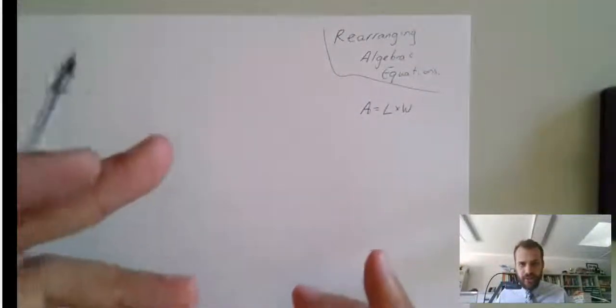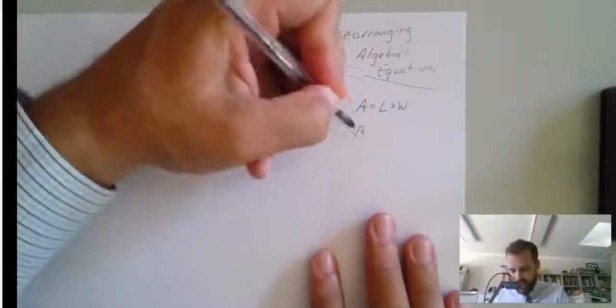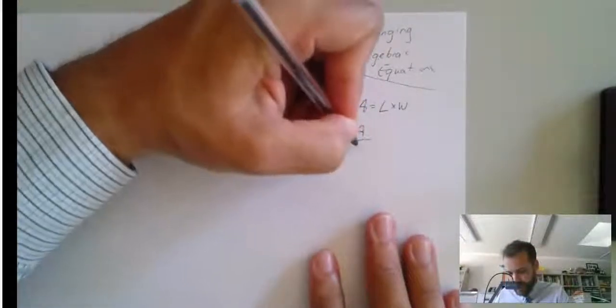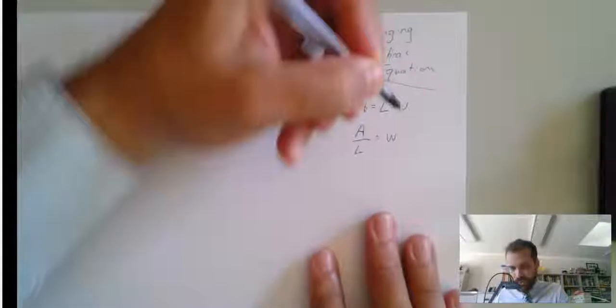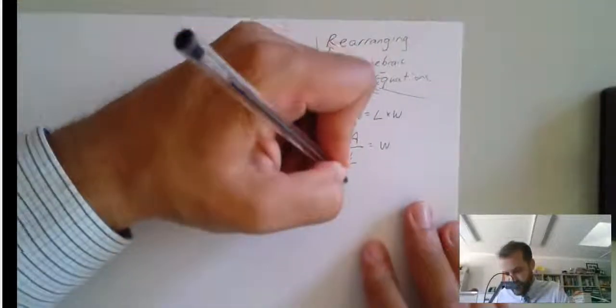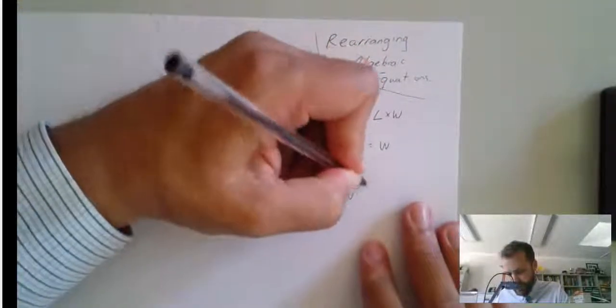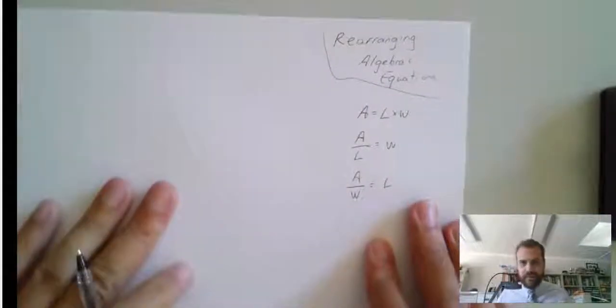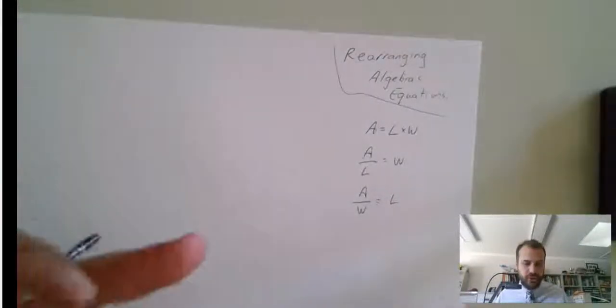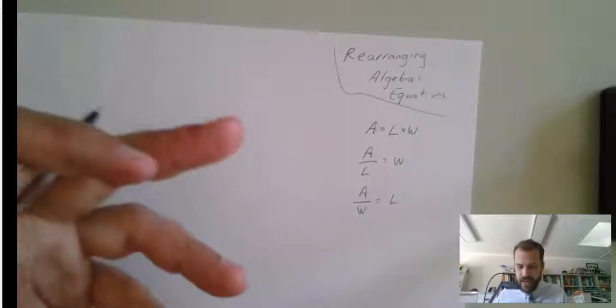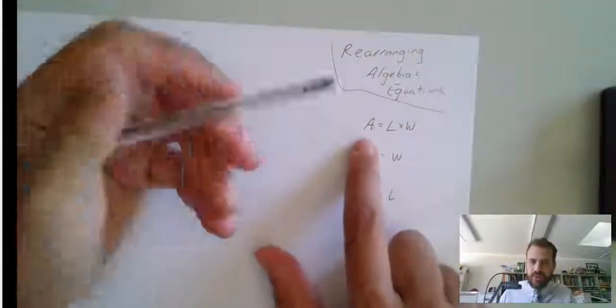But we can rearrange that. We can rearrange it to say that area divided by length equals width. We could rearrange it to say that area divided by width equals length. So, we can rearrange purely algebraic things.